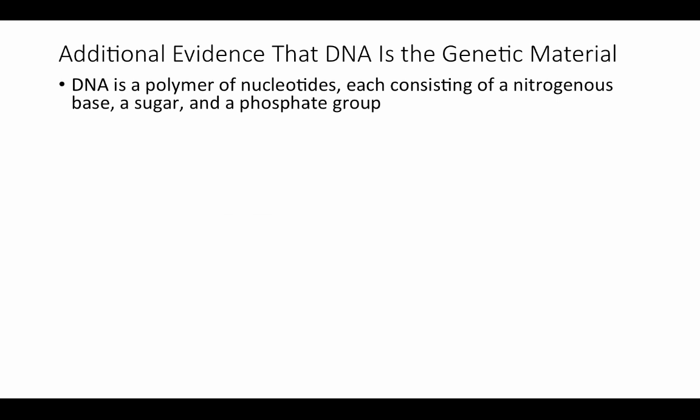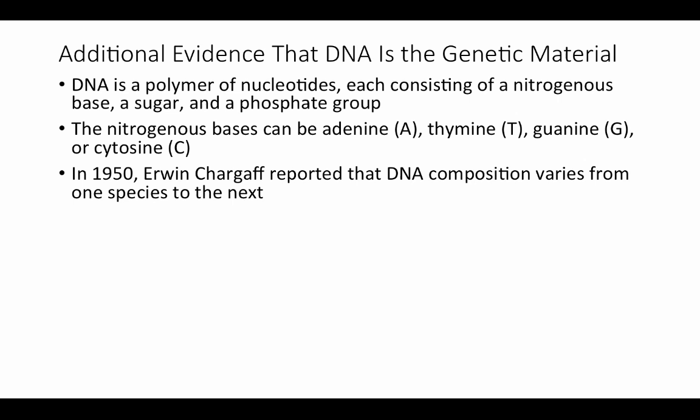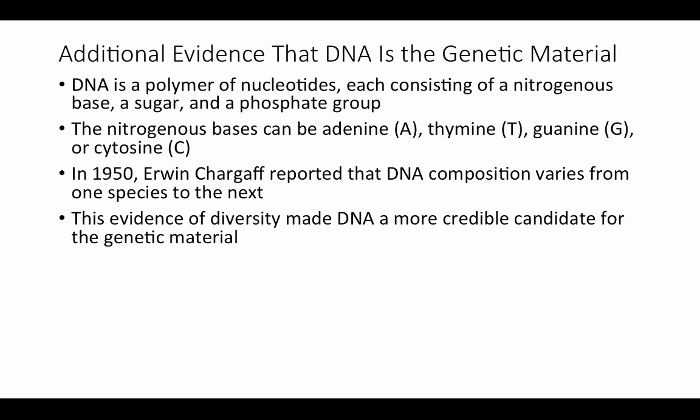We know that DNA is a polymer of nucleotides, each consisting of a nitrogenous base, a sugar, and a phosphate group. The nitrogenous bases can be adenine, thymine, guanine, or cytosine. In 1950, Erwin Chargaff reported that DNA composition varies from one species to the next — an indication that the variability necessary to create organismal diversity is possible with DNA. The fact that DNA composition differs between species made DNA a more credible candidate for the genetic material.